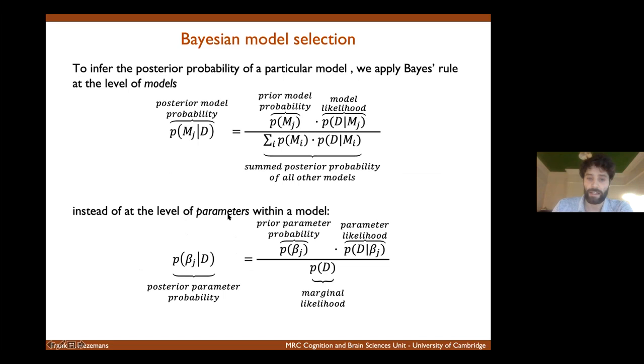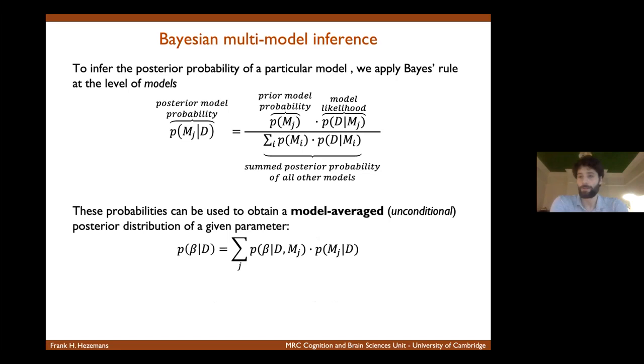But if I show you the old equation again, you can see that all I'm doing is just substituting the parameter beta with model M. So fundamentally, it's the same thing as we did previously, we're just performing inferences over models. And why do we care again about these model probabilities? Well, we can use them to obtain a model averaged posterior distribution of a given parameter. And this is also referred to as the unconditional distribution, in the sense that it's not conditional on one particular model. It takes into account all the different models simultaneously.